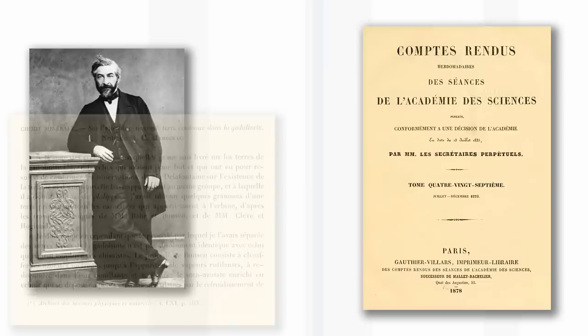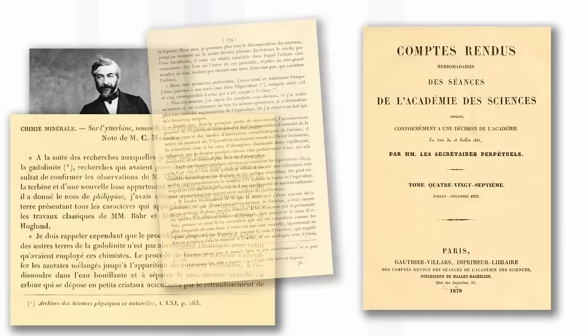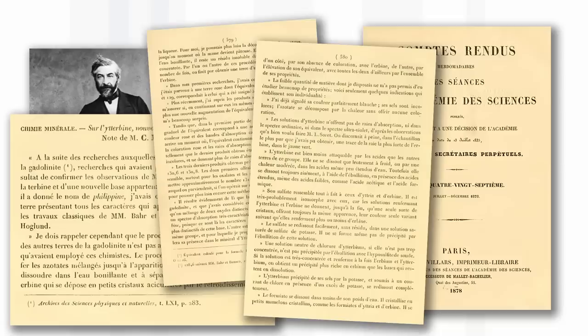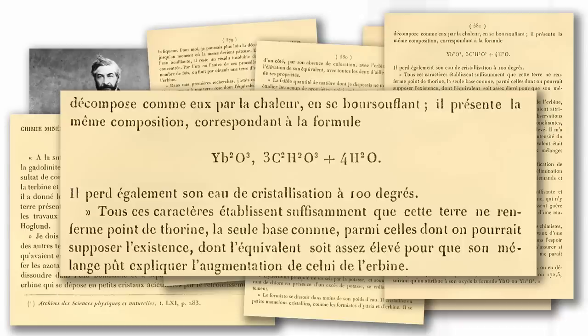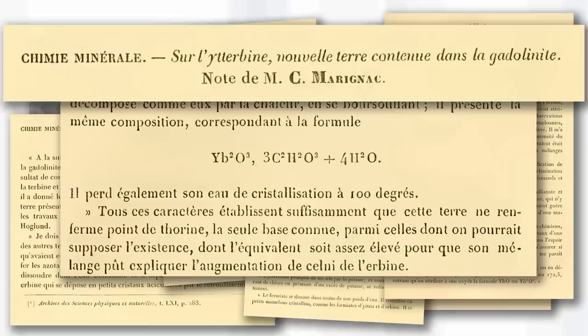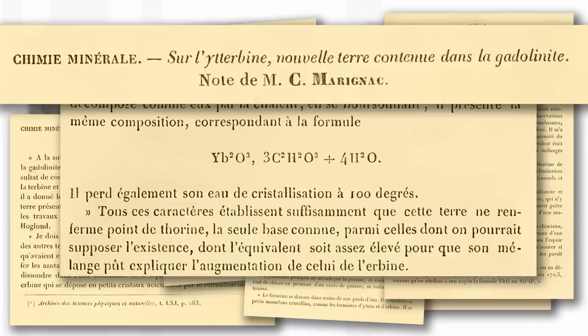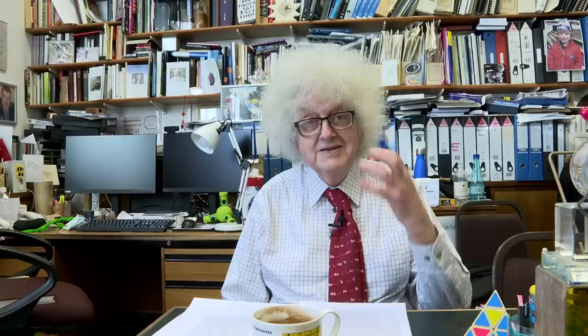He was analyzing an oxide from gadolinite. This was really painstaking work, heating things up, dissolving them up again, then trying to isolate different compounds. He found an extra oxide that he was not expecting. He published the paper in French, called sur l'itterbine, nouvelle terre contenue dans la gadolinite, which means about ytterbium, a new element or earth contained in gadolinite.